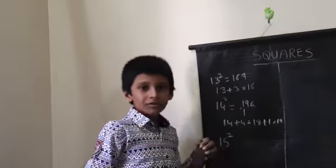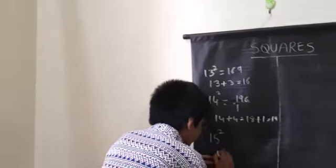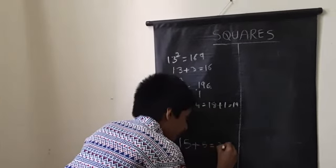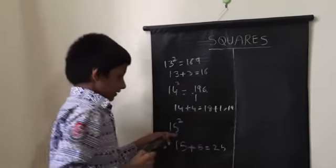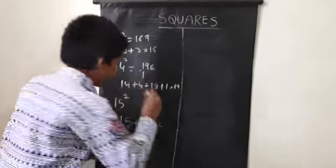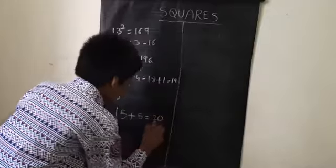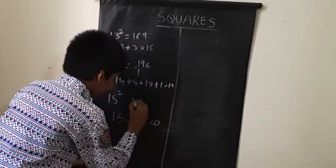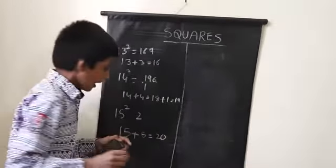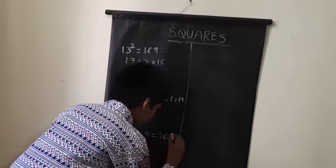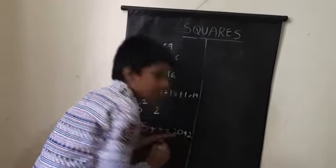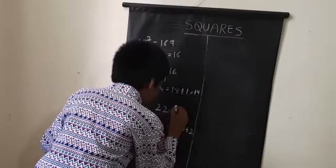Fifteen square. How much more than ten? Five. Fifteen plus five: twenty. See, this five into five. Now twenty-five. Twenty. See this twenty right here. Five times five is twenty-five. Twenty plus two: twenty-two. 225.